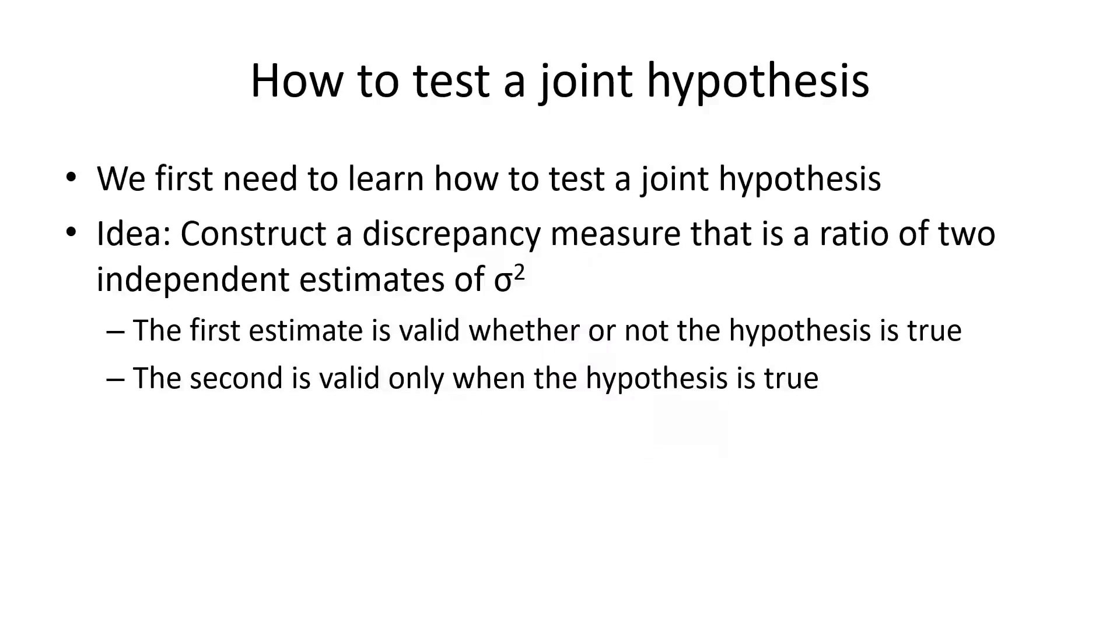The idea is to construct a discrepancy measure that is a ratio of two independent estimates of sigma squared. And if the ratio gets too large, then we say something is fishy. We reject the hypothesis. The first estimate of sigma squared is valid whether or not the hypothesis is true, and the second is valid only when the hypothesis is true. So they should be the same. When it gets too large, then we know it's not the same, and the hypothesis is not true.